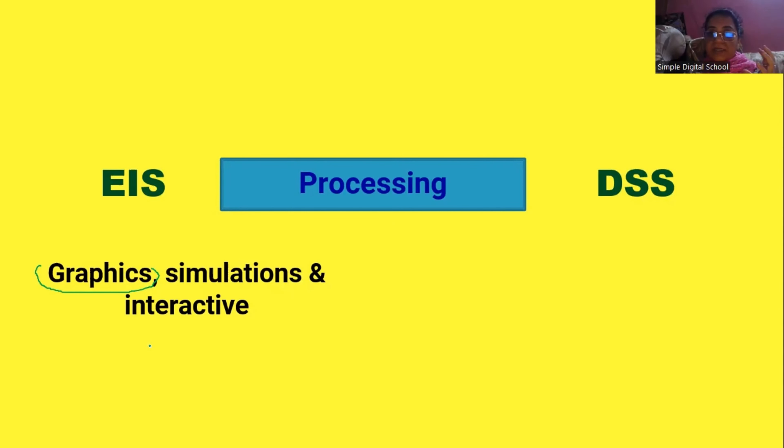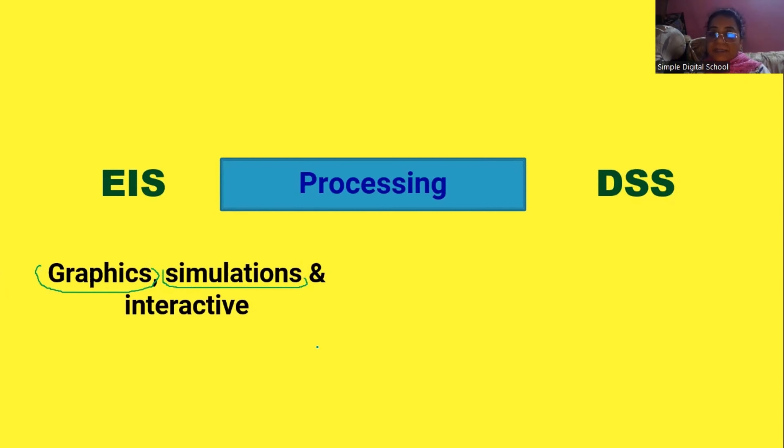Third point: how is processing done in each system? In the EIS system, a lot of work is based on graphics — charts and pictorial diagrams that clearly depict key performance indicators. For example, when using dashboards as an information system at the executive level, all data is shown in charts and graphs. You can easily check how much revenue was generated in a particular year for a particular product. So in EIS, processing is generally in the form of graphics, simulations with multiple data, and GUI is essential.